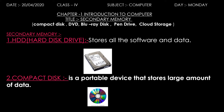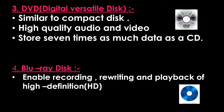So compact disk — it is also called CD. A CD is a portable device that stores a large amount of data. This is an image of a CD. Next is DVD, digital versatile disk. This is an image of a DVD. It looks similar to a compact disk.